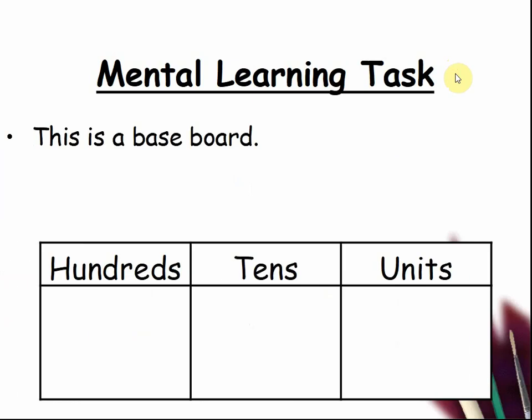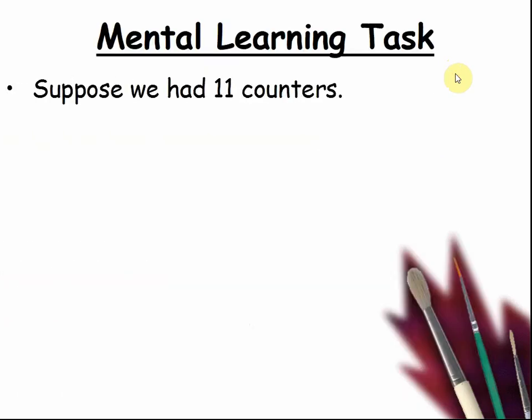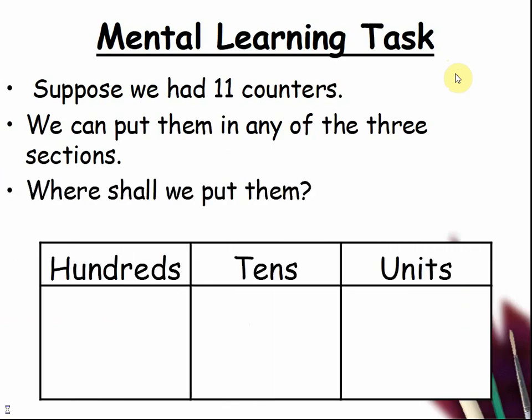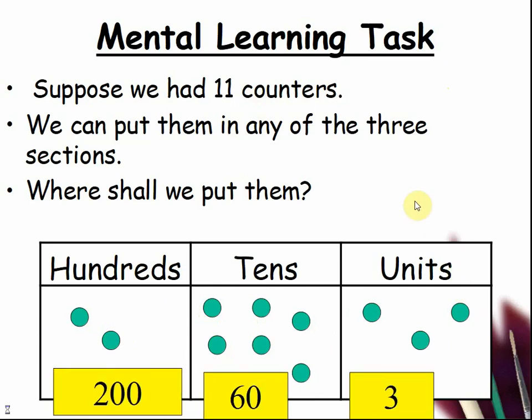This is a baseboard. Suppose we had 11 counters. We can put them in any of the 3 sections. Where shall we put them? I think I will put them here. If you look, I have 2 hundreds, I have 6 tens, and I have 3 units. So, 200 plus 60 plus 3, which makes 263.